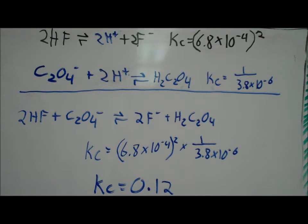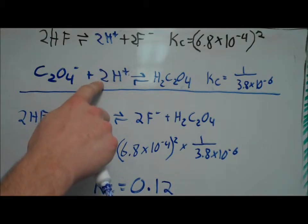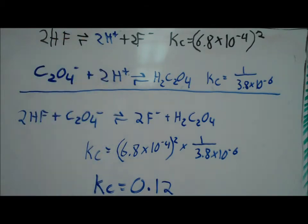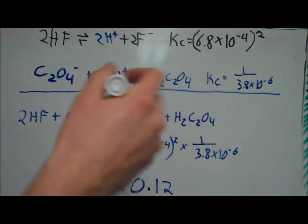Once we've made modifications to the first and second equations, we can now add both of these equations to get our overall equation. When we add, we need to check to make sure there's no spectator ions in our first two equations. So we do see that we have two spectator ions. It's the 2H plus in the reactant side of the second equation and 2H plus in the product side of the first equation. So we'll cross those out.